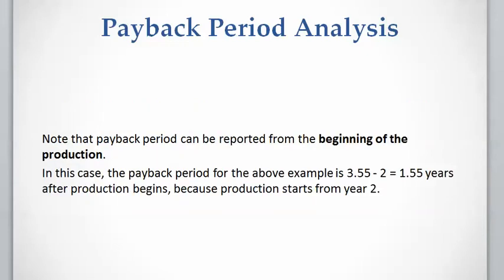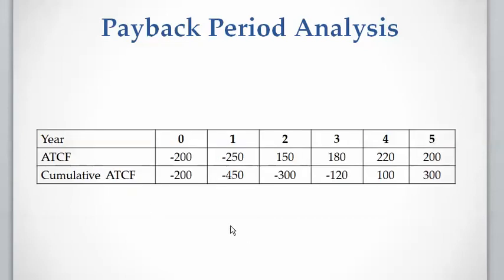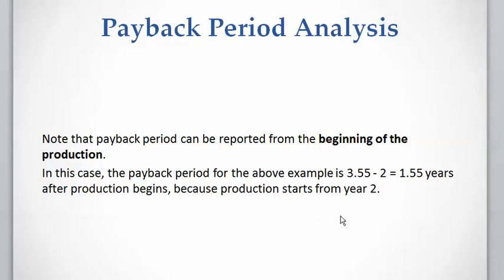We can also calculate the payback period from the beginning of production. As you can see, production starts from year two. The payback period from the beginning of the project is 3.55 years. If we want to calculate from the beginning of production, we deduct two years, giving a payback period of 1.55 years from the start of production.